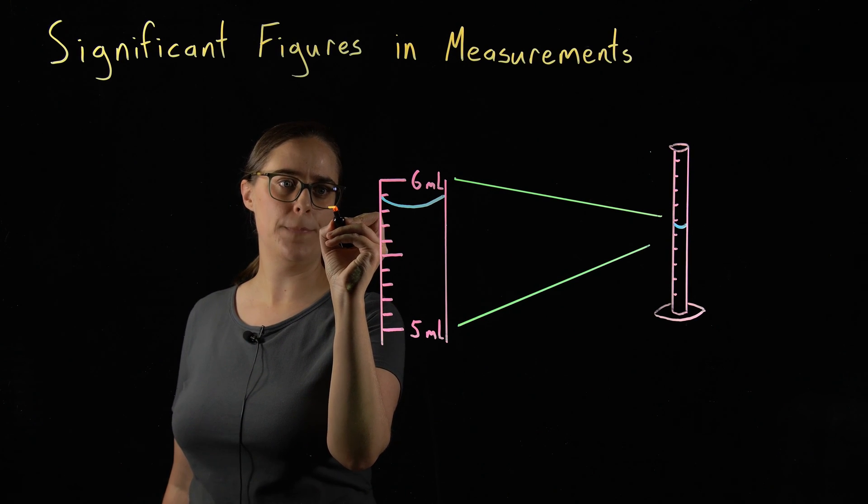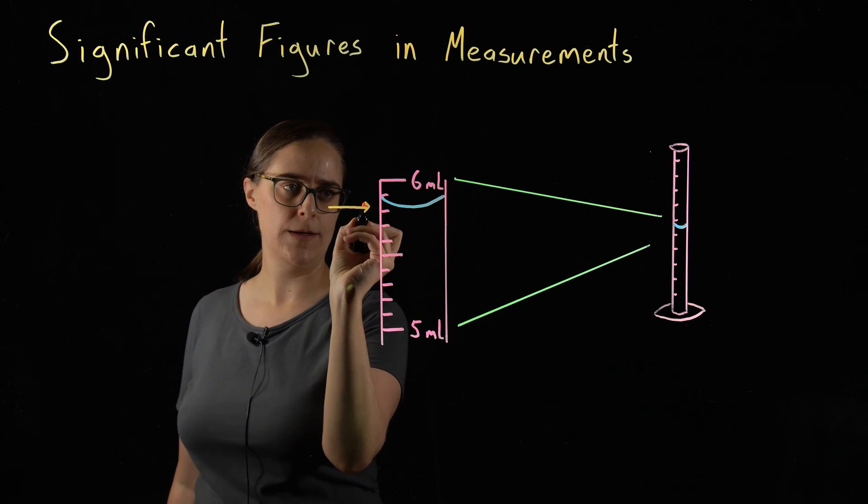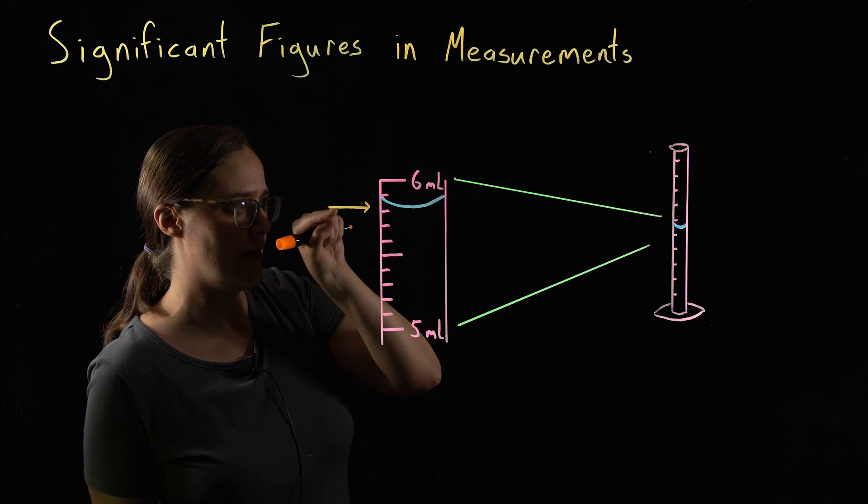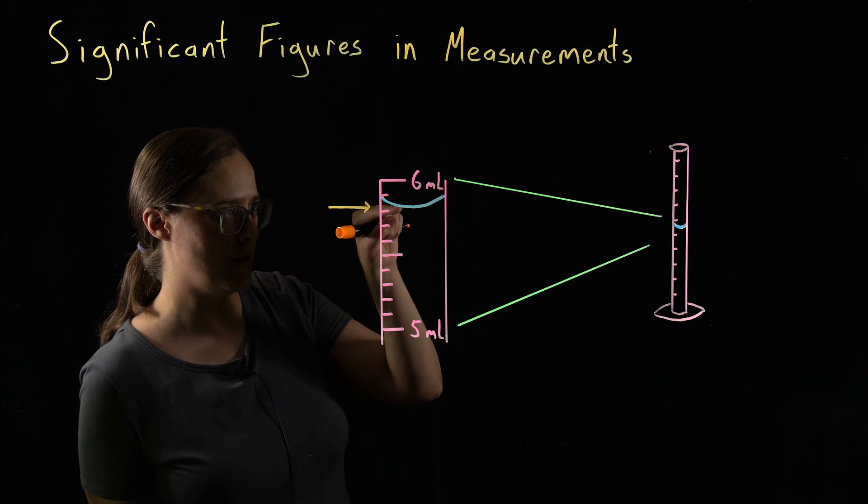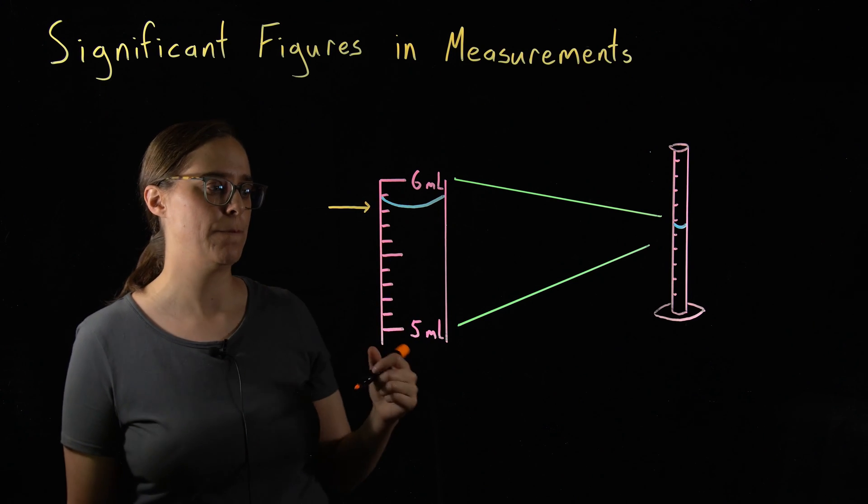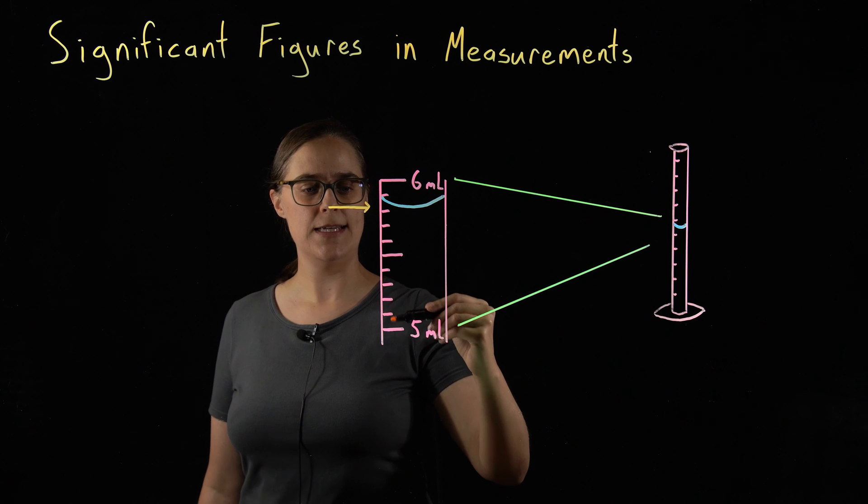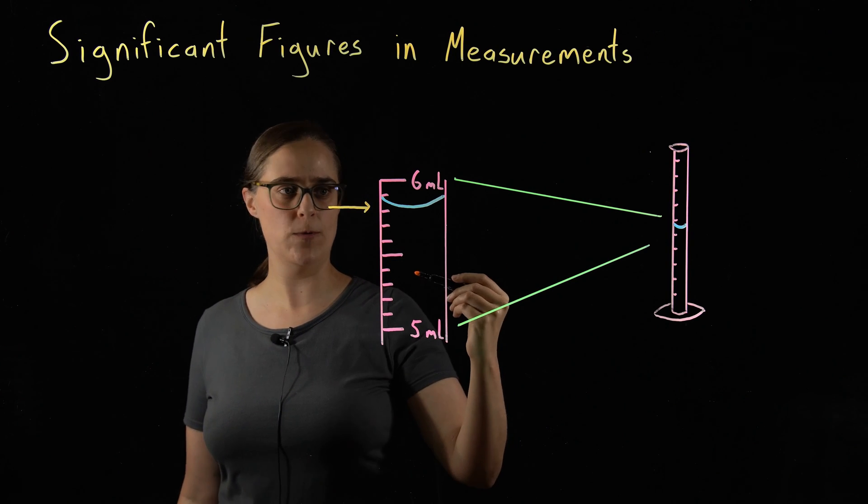You need to measure from the bottom of the meniscus. So if you had this piece of glassware in front of you, you would need to align your eye and look at the bottom of the meniscus straight on. So this is 5 milliliters. This is 6. Each of the smaller lines is 0.1 milliliters.